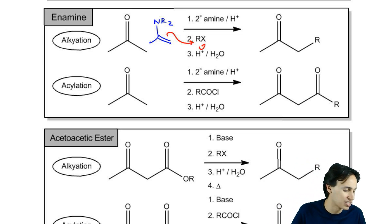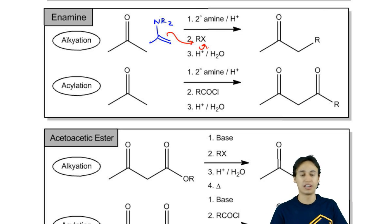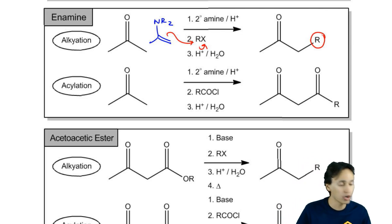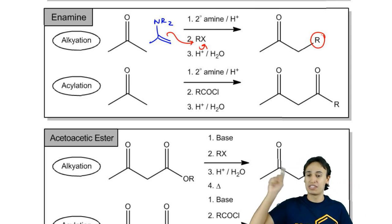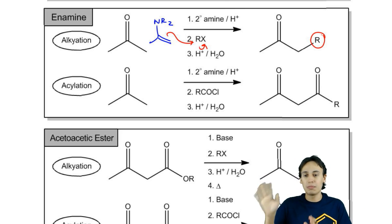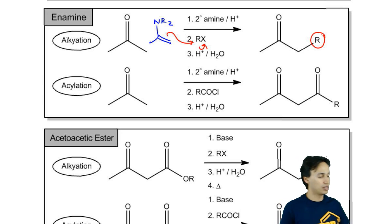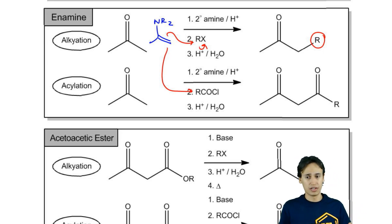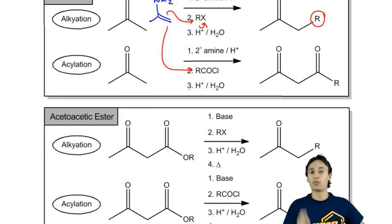It turns out that enamines are also great nucleophiles at the alpha carbon. Enamines can also do backside attacks on alkyl halides and they can also add R groups. Now, you might be wondering what happens to the nitrogen. It gets hydrolyzed. Don't worry. There's a whole acid workup and you get rid of it. We'll talk about it. But in the meantime, just know that it does the same thing. In the same way, you could also react with an acid chloride. An acid chloride would just do an enamine acylation. That was the second way.